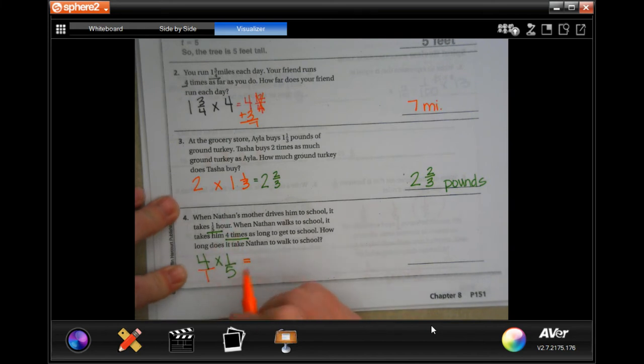We can just put it over one because we're not dealing with a mixed number. We're only dealing with a whole number.